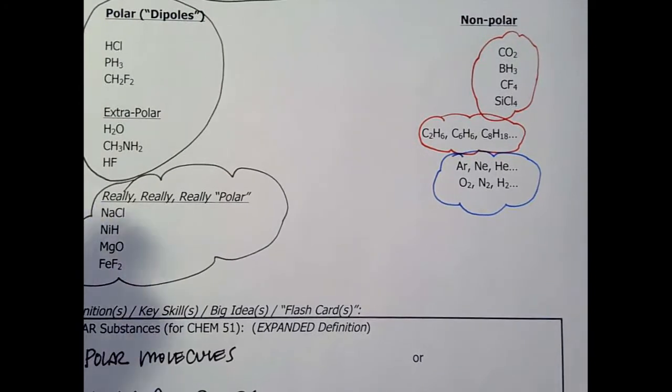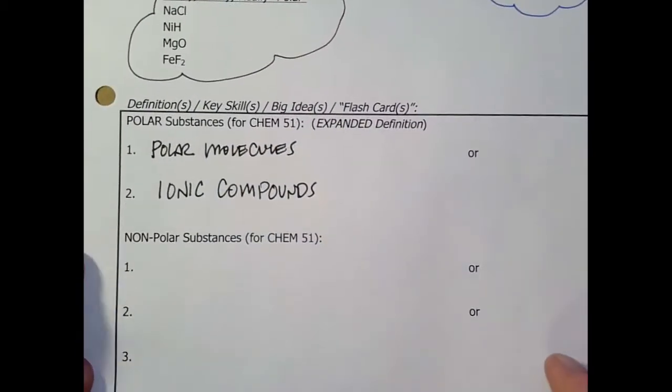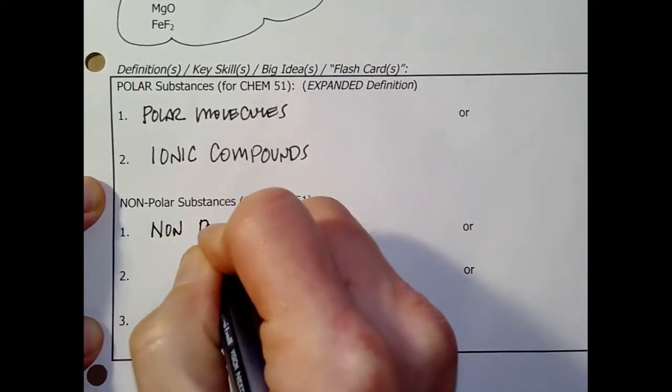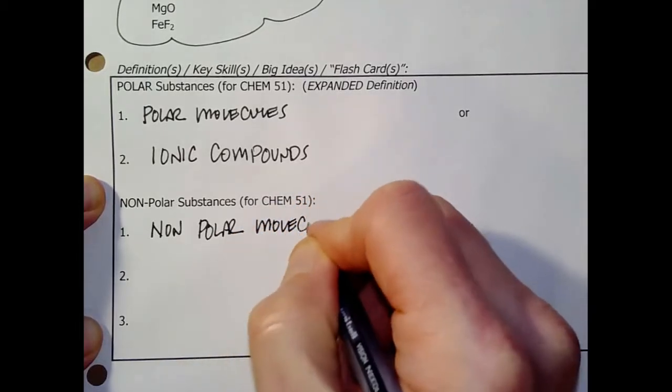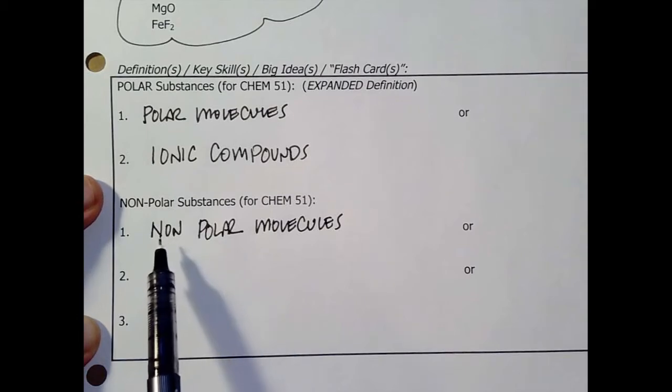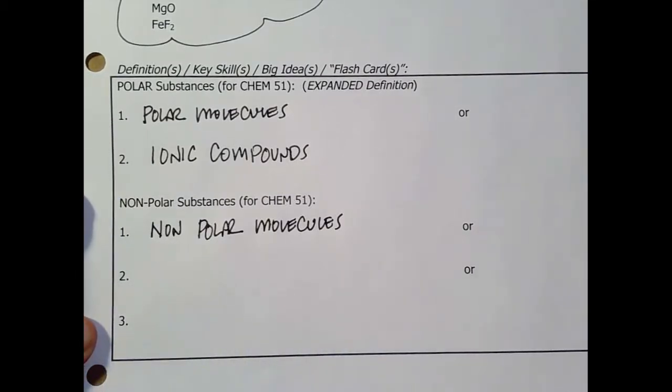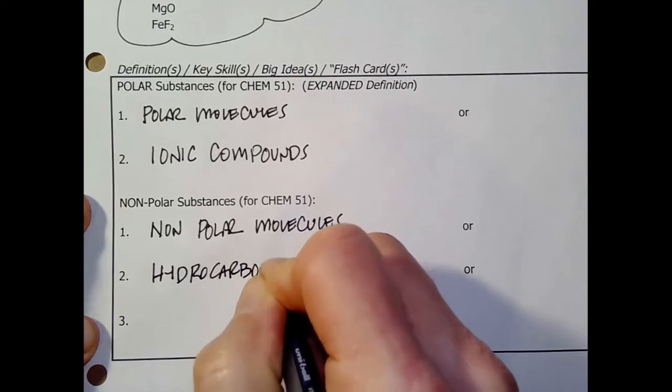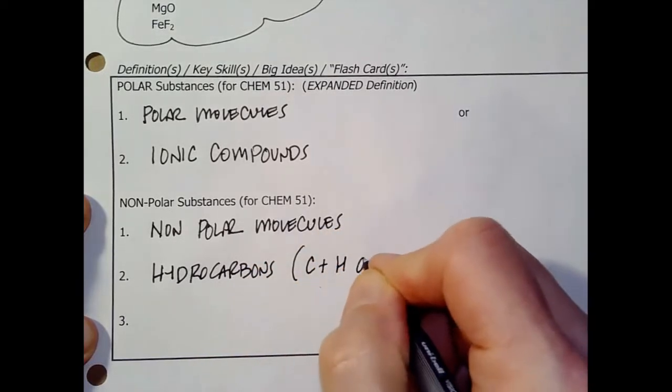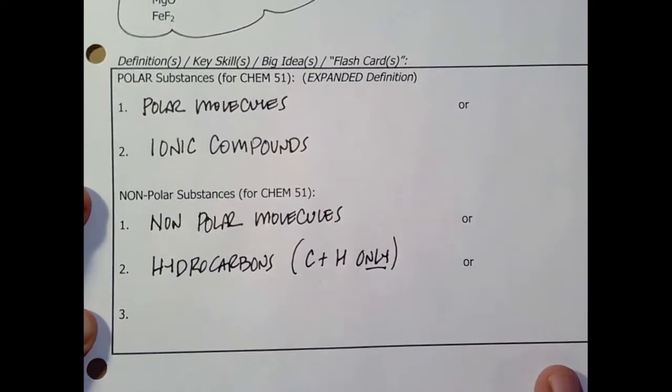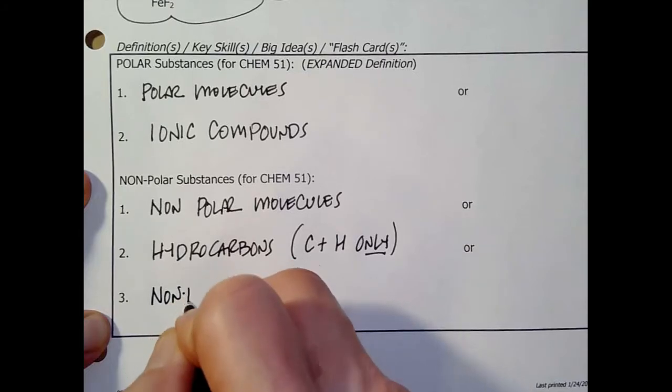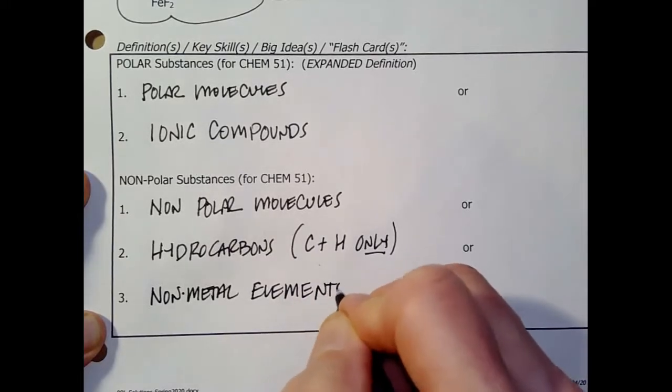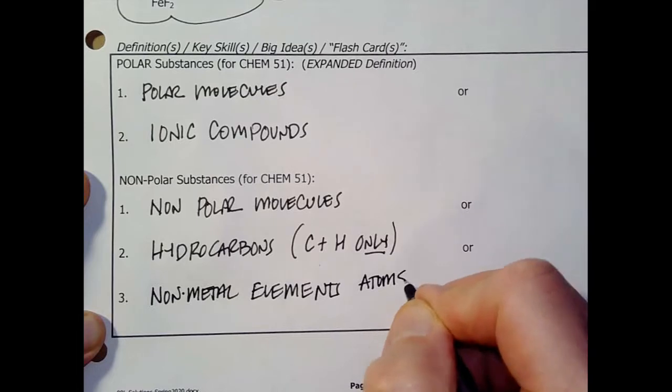Let me stop the video and think about that. All right, you got it? Here's what we had up there. We had nonpolar molecules. That is to say, compounds that are made up of nonpolar molecules. The second group, we said hydrocarbons, C and H only. That's nothing new. And lastly, we're going to say nonmetal elements. And these can be atoms or molecules.